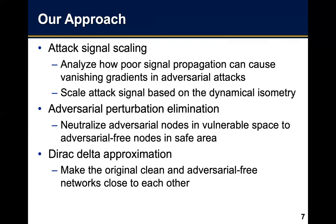Our approach contains three contributions. First, in order to ensure an informative attack signal with both well-conditioned Jacobian and meaningful signal propagation from the network alignment, we analyze how poor signal propagation can cause vanishing gradients in adversarial attacks. We then propose an attack signal scaling method to scale the attack signal in back propagation, which improves the efficiency and effectiveness of gradient-based adversarial attacks.